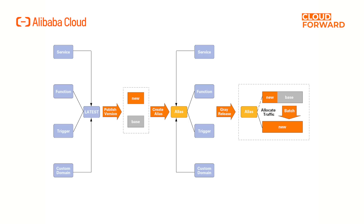The process to configure gray release is as follows. Step 1: publish a new version in the service. Step 2: create or update an alias, associating the new version with the stable version — the new version is the gray version. Step 3: associate the trigger with the alias. Step 4: associate the custom domain with the alias. Step 5: use the alias when calling the function. Traffic will be sent to the new version and the stable version according to the configured ratio.